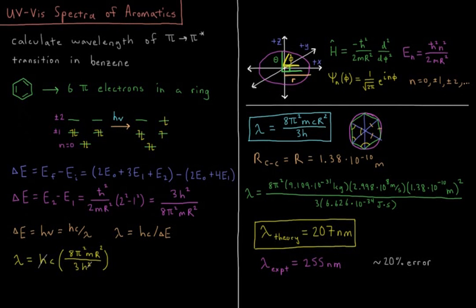This video will discuss the UV-vis spectra of aromatic molecules as we will calculate them using the particle in a ring quantum mechanical model system. Our task in this video is to calculate the wavelength of the lowest energy π to π* transition in benzene.